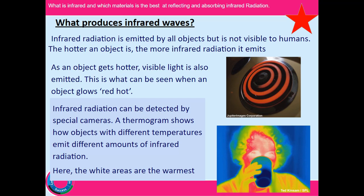Objects glow red hot, then white hot as they get hotter, with blue being the final and hottest colour — though you won't see that on Earth. You might see white hot in places like steelworks and iron foundries.